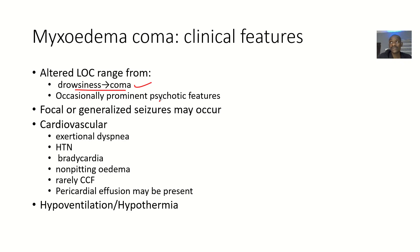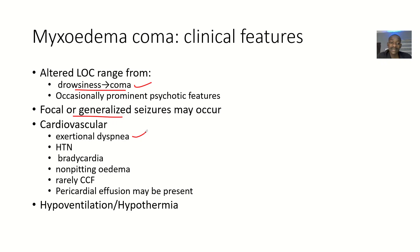If you ask the patient a question, they respond inappropriately. There could be focal or generalized seizures which may occur. Under the cardiovascular system, you might have exertional dyspnea — if the patient does any work or any little stressful activity, they start having more difficulty breathing. Hypertension may be present, as well as low blood pressure and bradycardia.